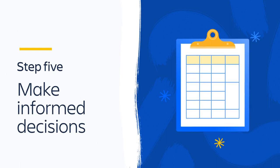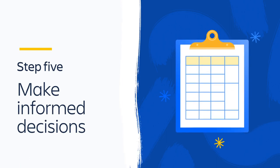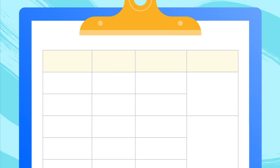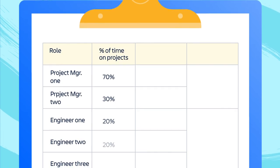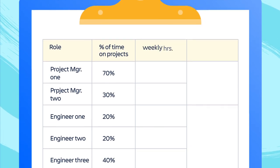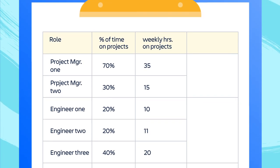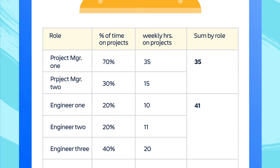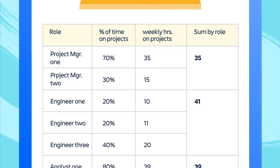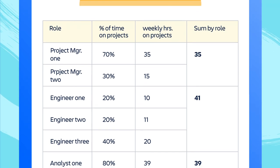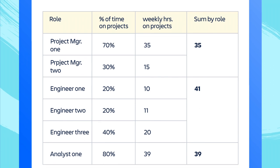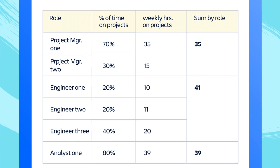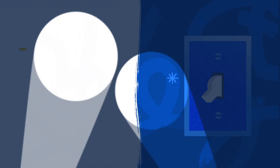Step 5. Bring everyone's results together for a full team picture. Create a table with columns per role, percentage of weekly time, hours spent on the project per week, and the total sum of hours spent by role. This will help you pull actionable insights from your data in the next step.